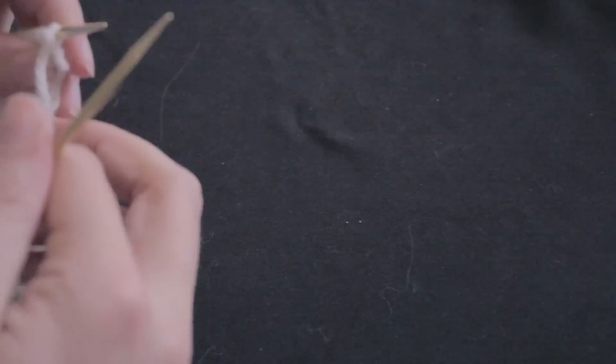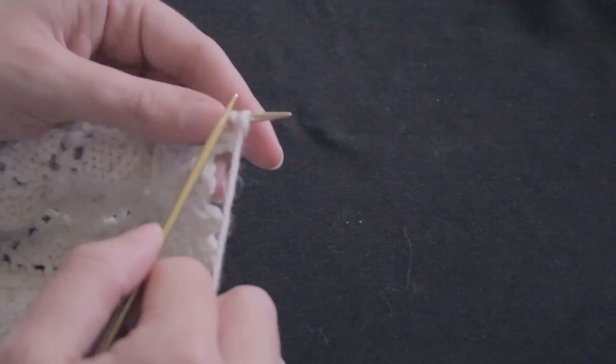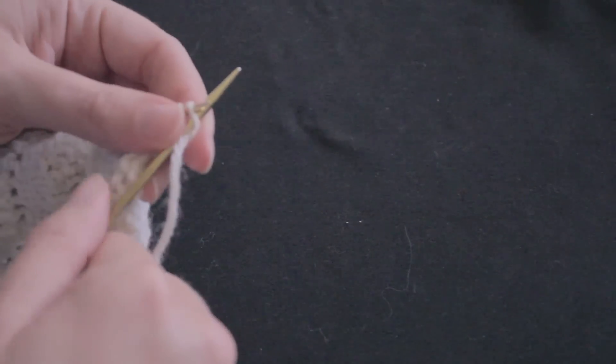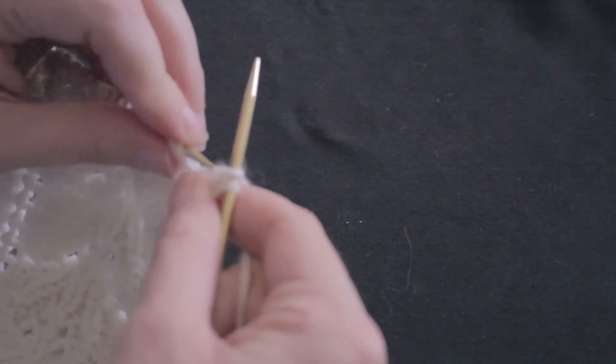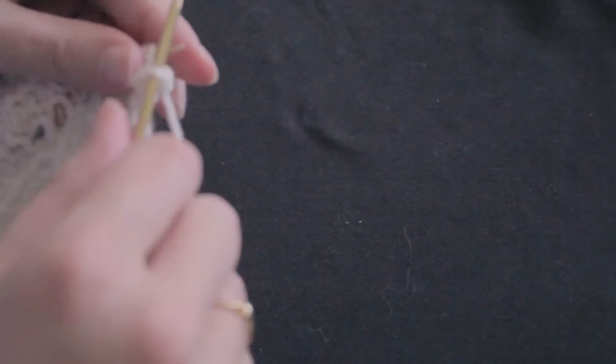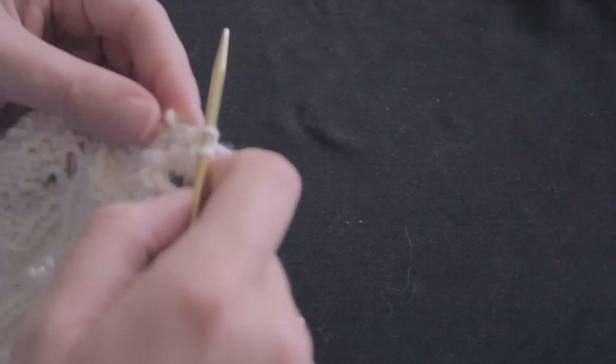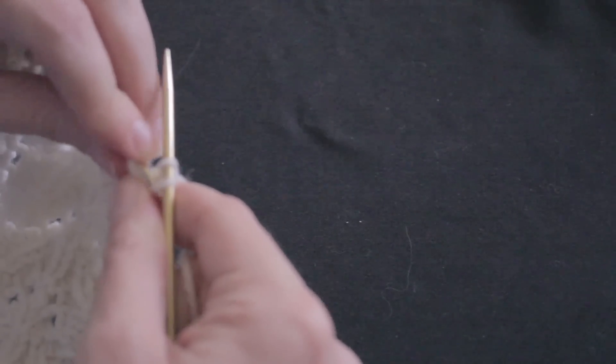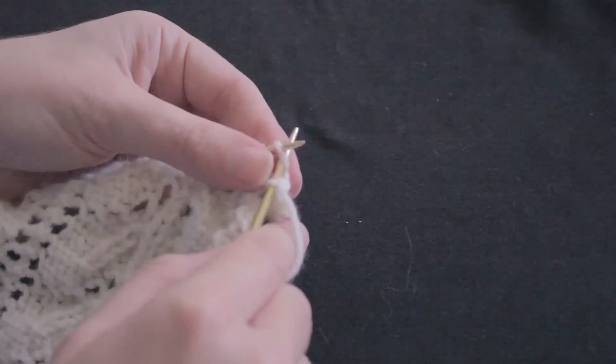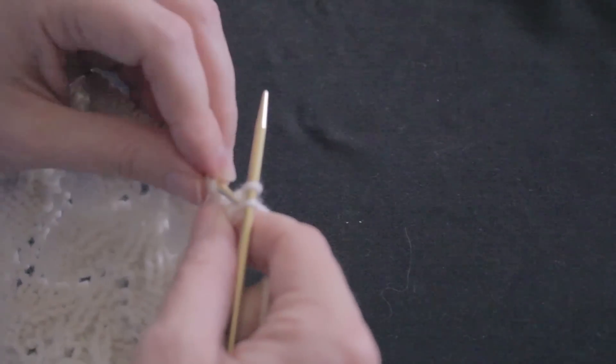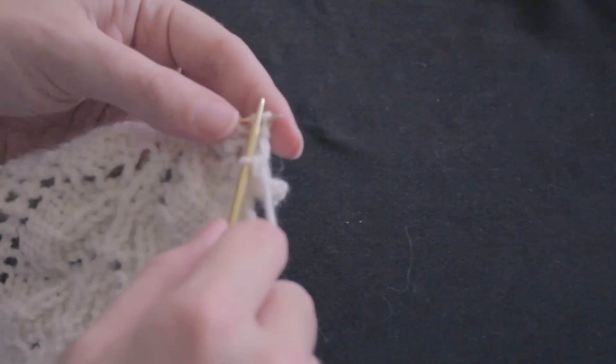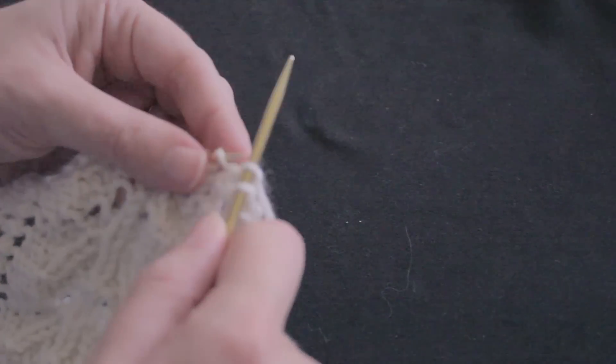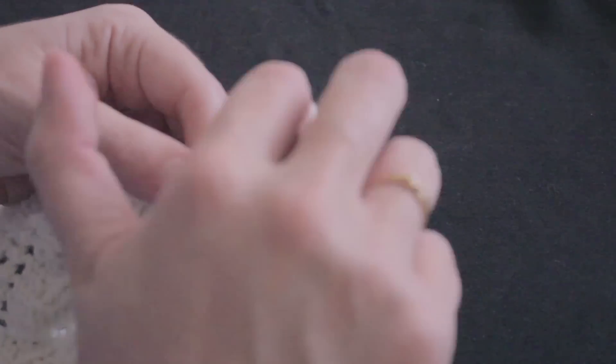So again you do this as knitting. So you knit 1 and then 2 and then you bind off 1, knit, pass over to bind off—that would be 2. Knit, pass over to bind off—that would be 3. And then I knit 1 and purl.